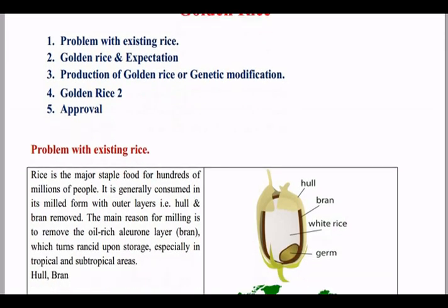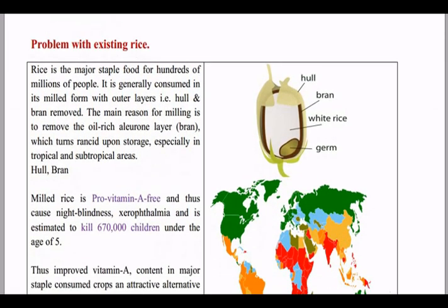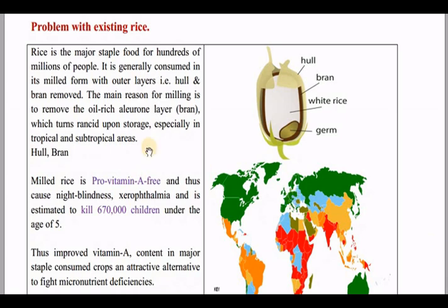First, let us look at the problem with existing rice. We will see the rice grain structure. In the rice grain, at the top there is a structure called the hull. At the bottom there is a brownish color structure called the bran, also called the aleurone layer. Then there is the white rice, which is rich in carbohydrates.